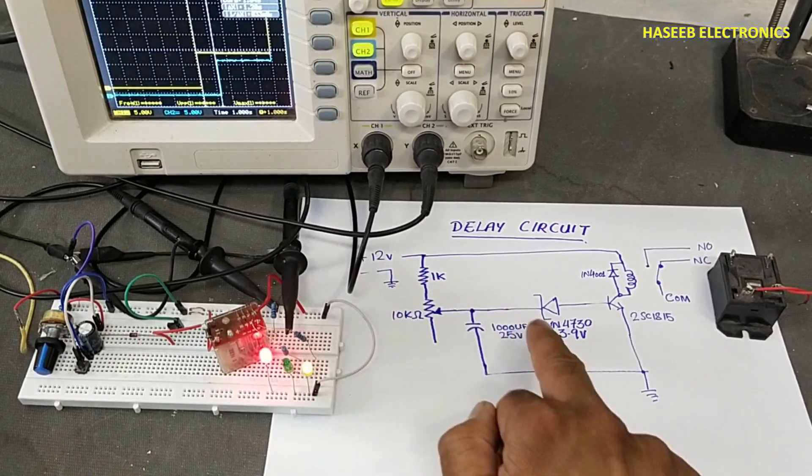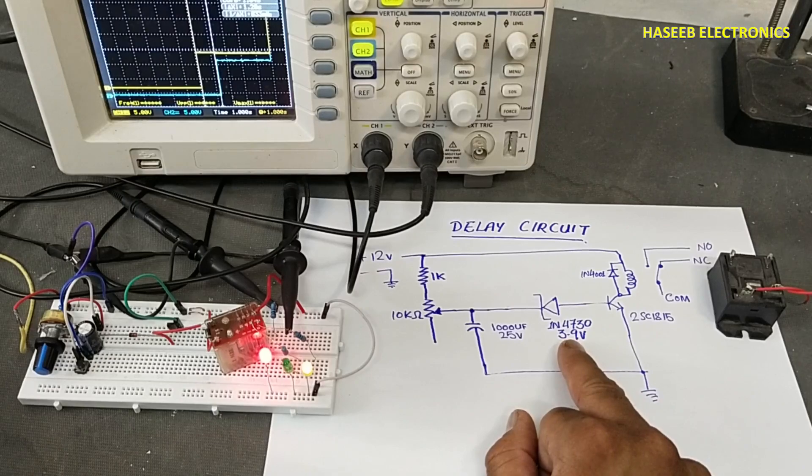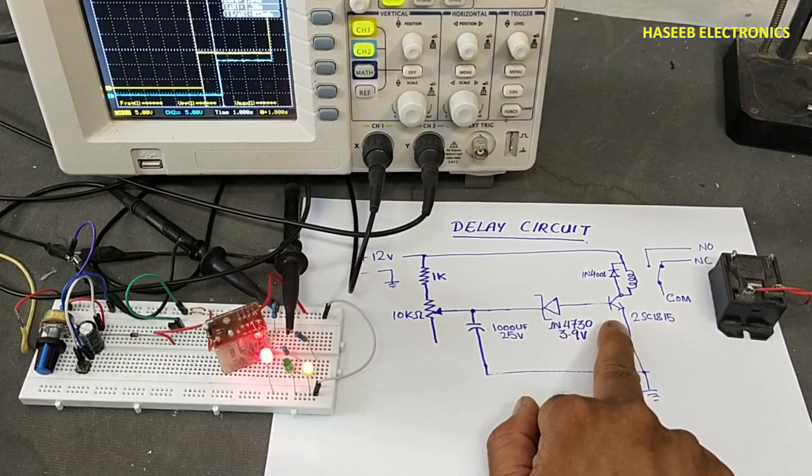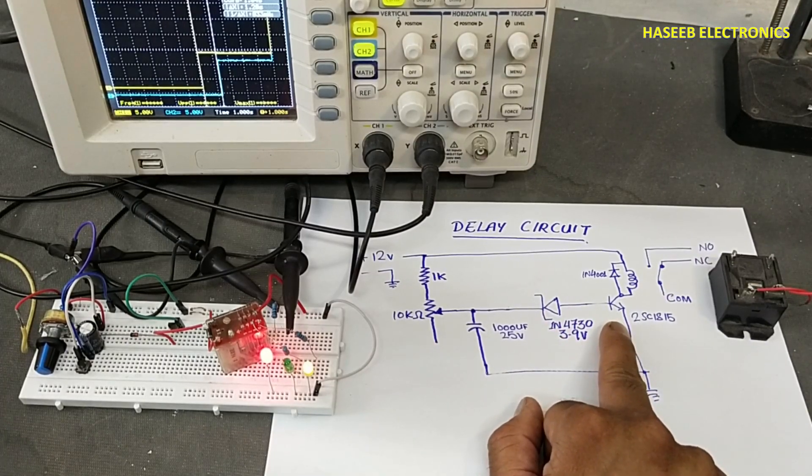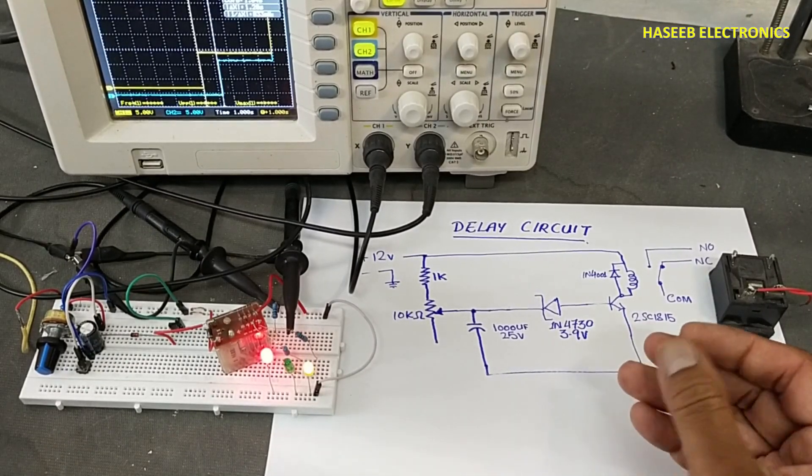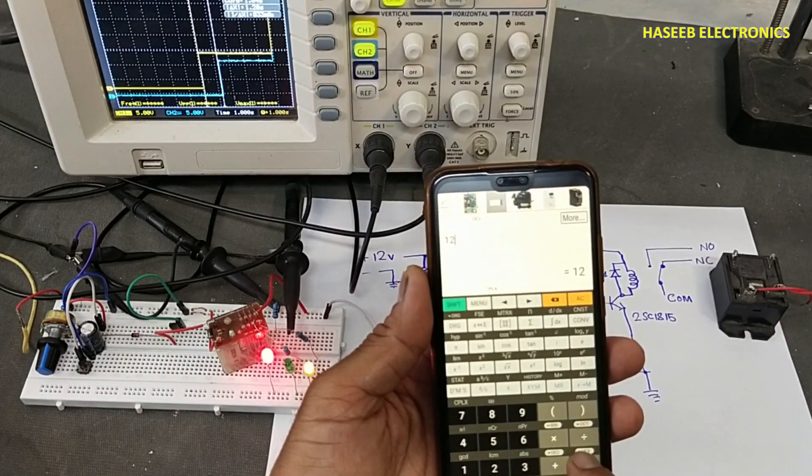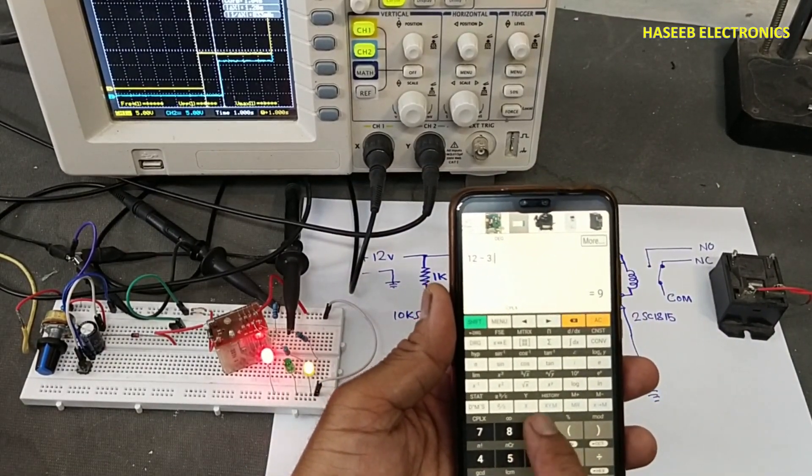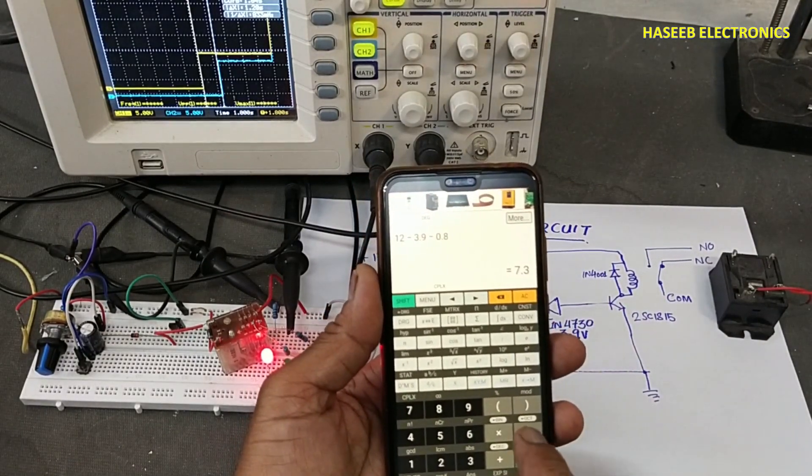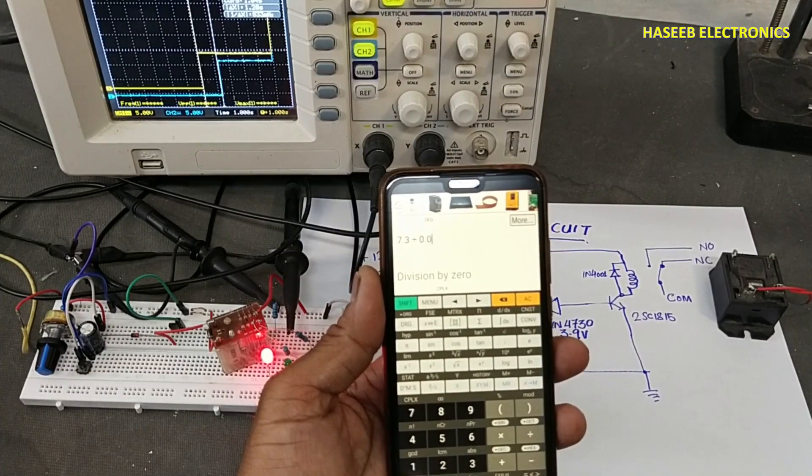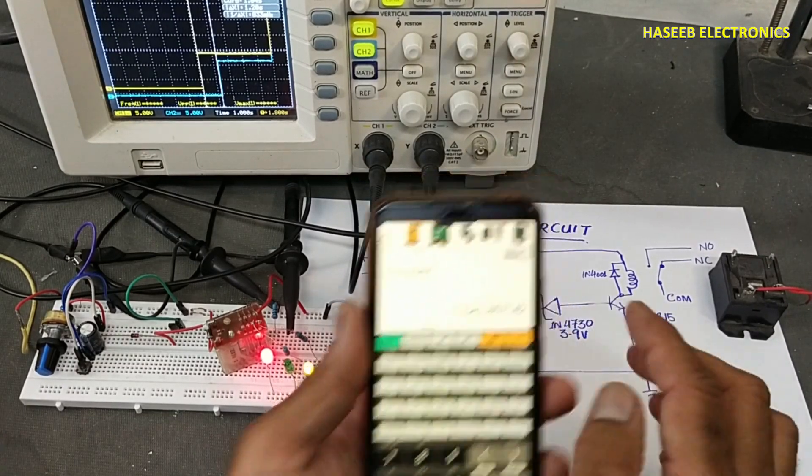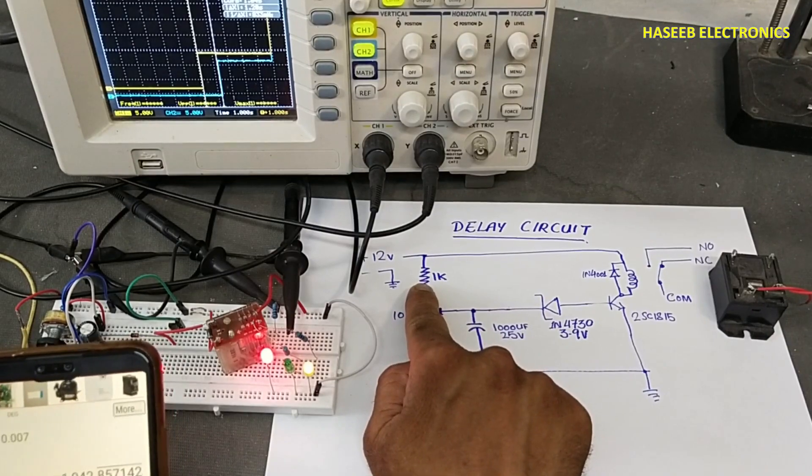At 8 milliamps here, we will consider the supply voltage here: 12 volts minus zener voltage. Here I am using 3.9 volts zener. 12 minus 3.9 minus base voltage. The base voltage divided by 0.007. At that time, 1042 ohms resistor is the minimum value for protection of this base.